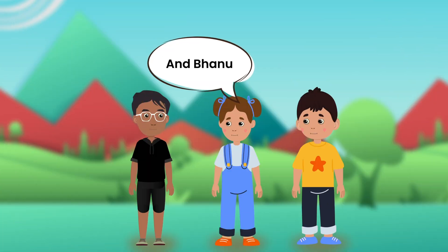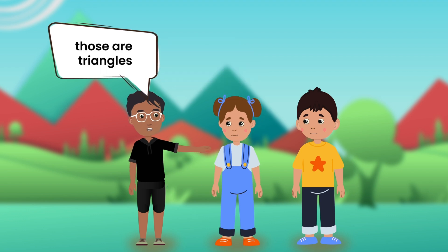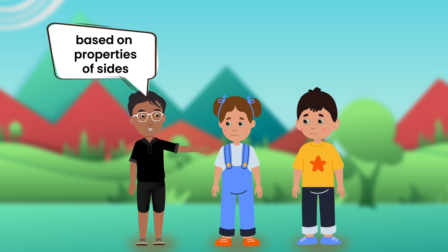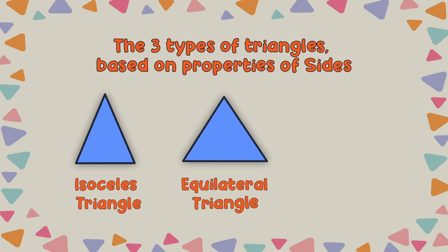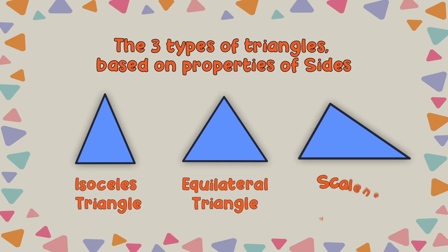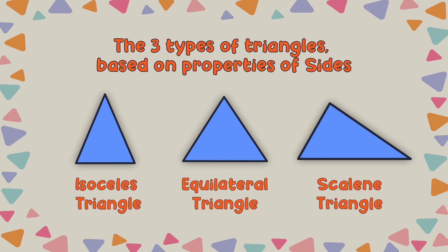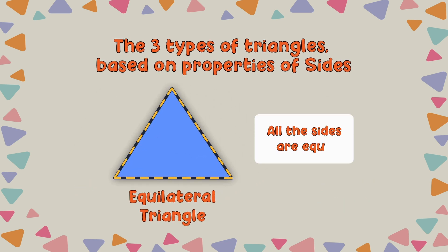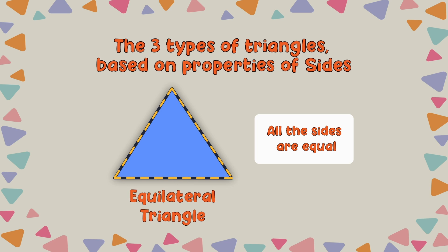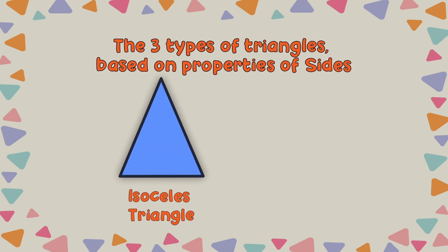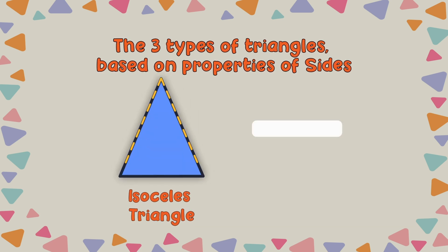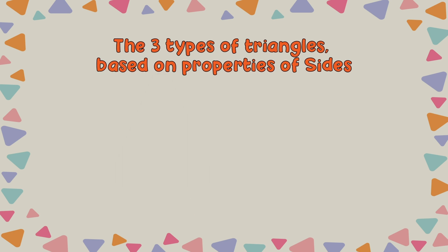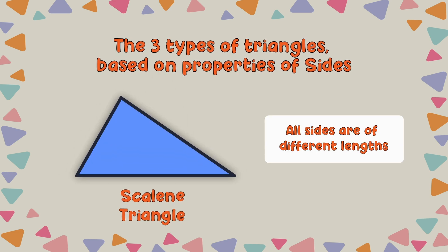And Banu, what are the other three kinds of triangles? Anna, those are triangles based on properties of sides. They are Isosceles Triangles, Equilateral Triangles and Scalene Triangles. In an Equilateral Triangle, all the sides are equal. An Isosceles Triangle is a triangle where two sides are equal. And all the sides are of different lengths in a Scalene Triangle.